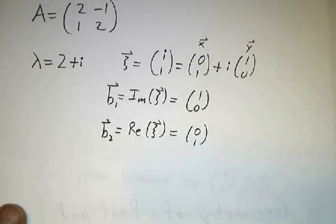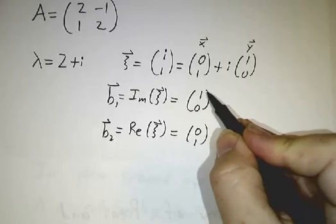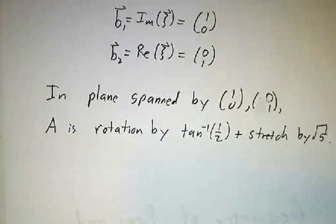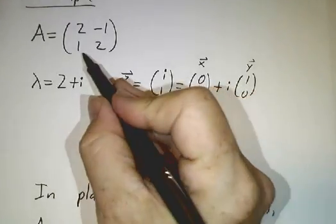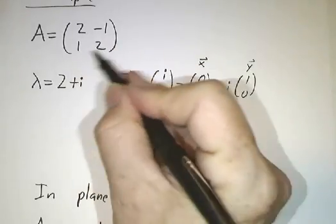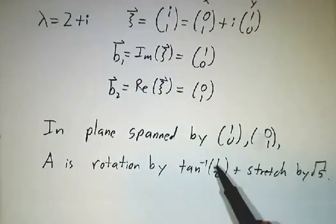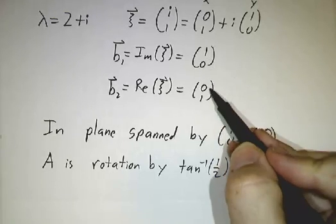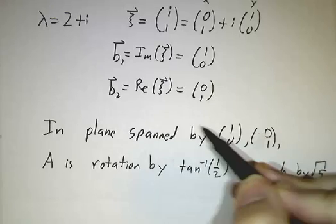And so the plane in which things are rotating is the plane spanned by [1, 0] and [0, 1]. Of course, that's just ℝ². And in fact, we already knew that this was rotation and stretching. But now we see how by looking at the imaginary and real part of the eigenvector, you get this picture.